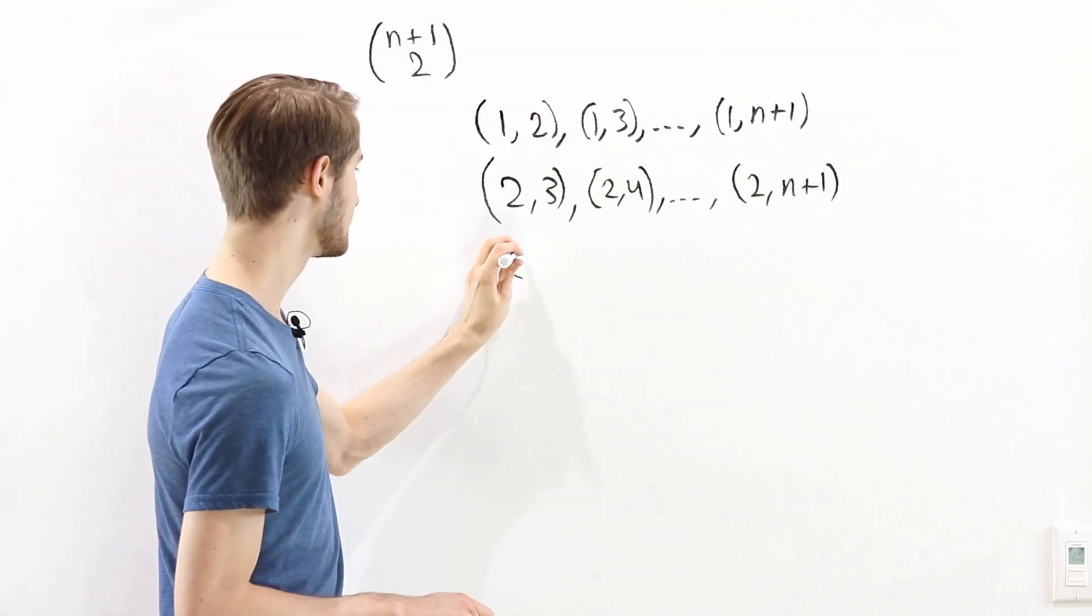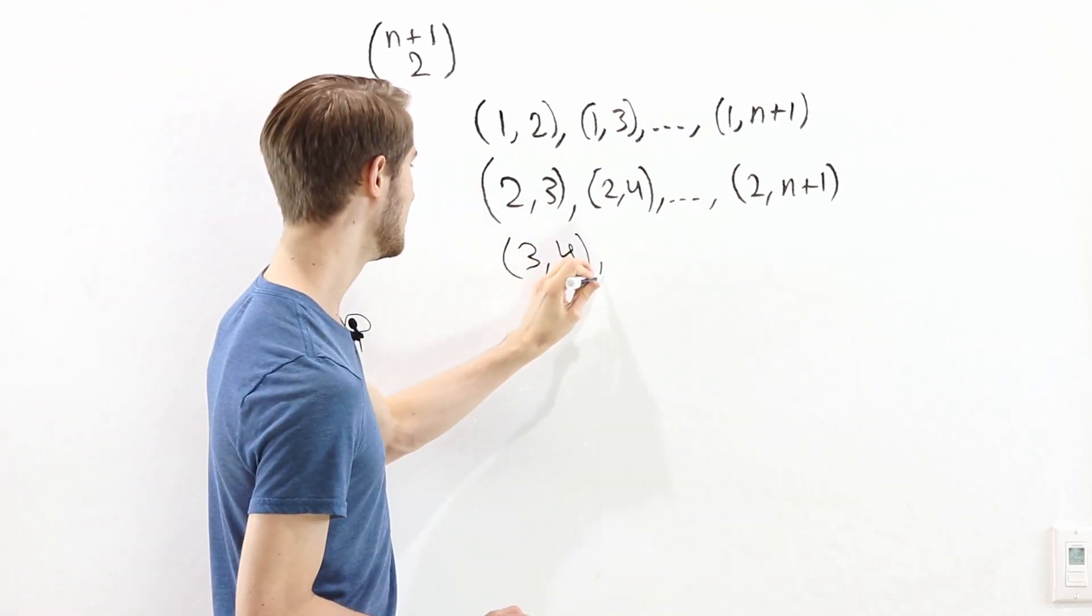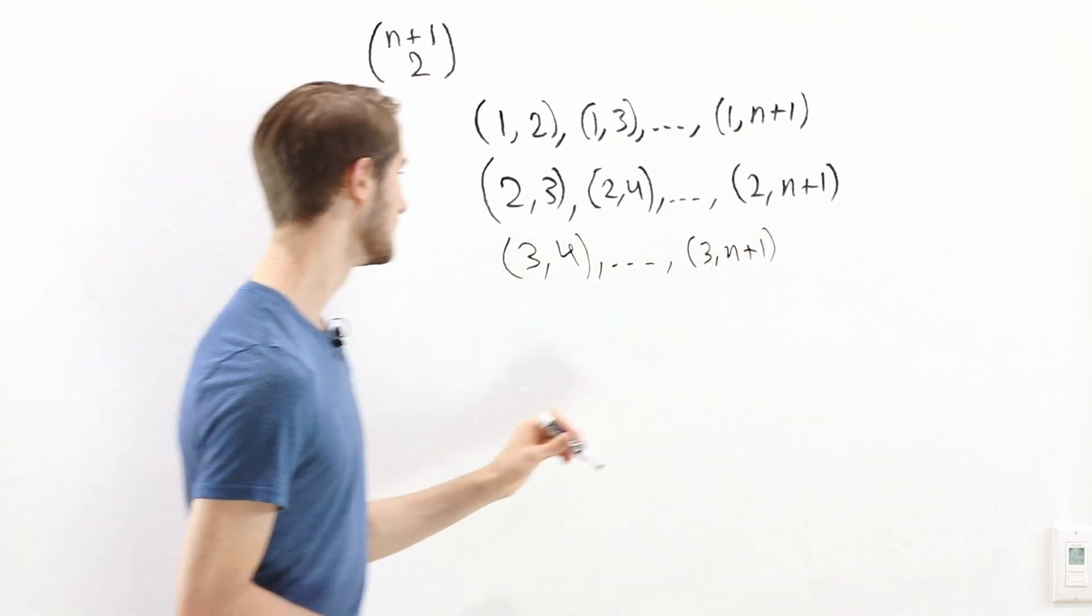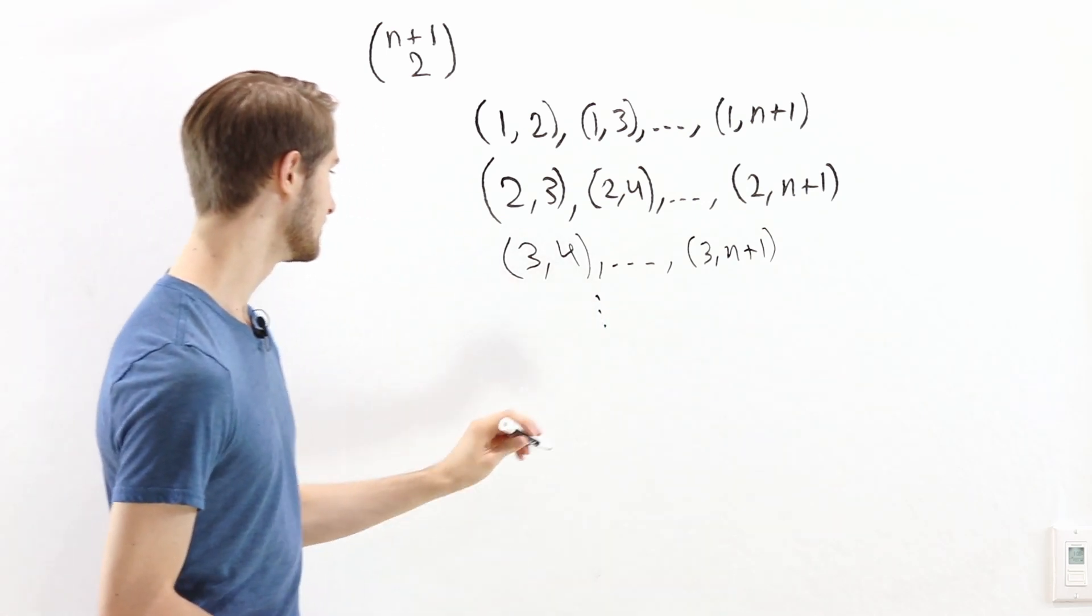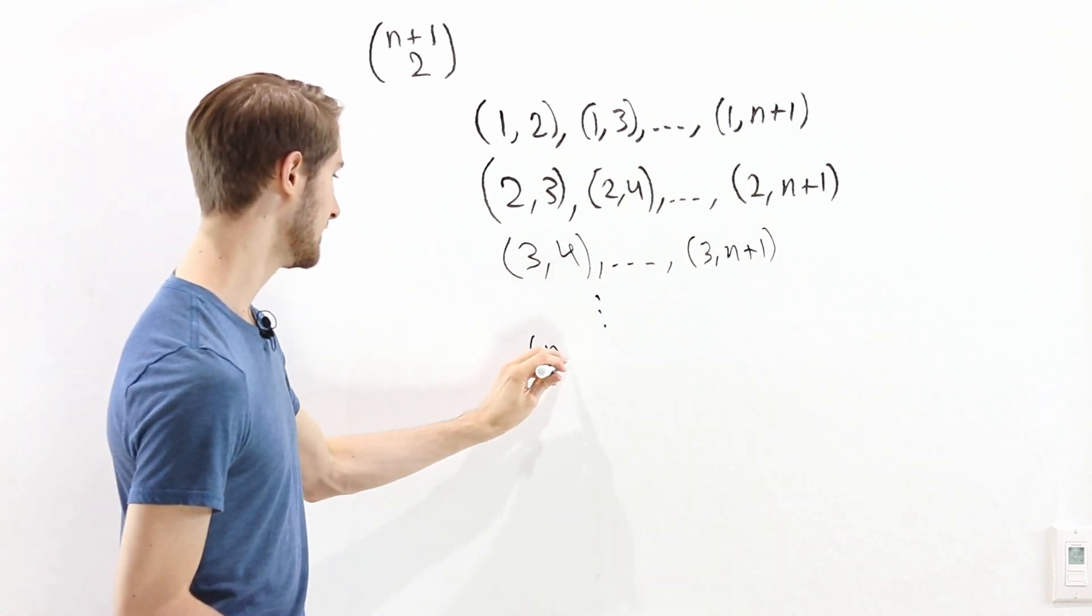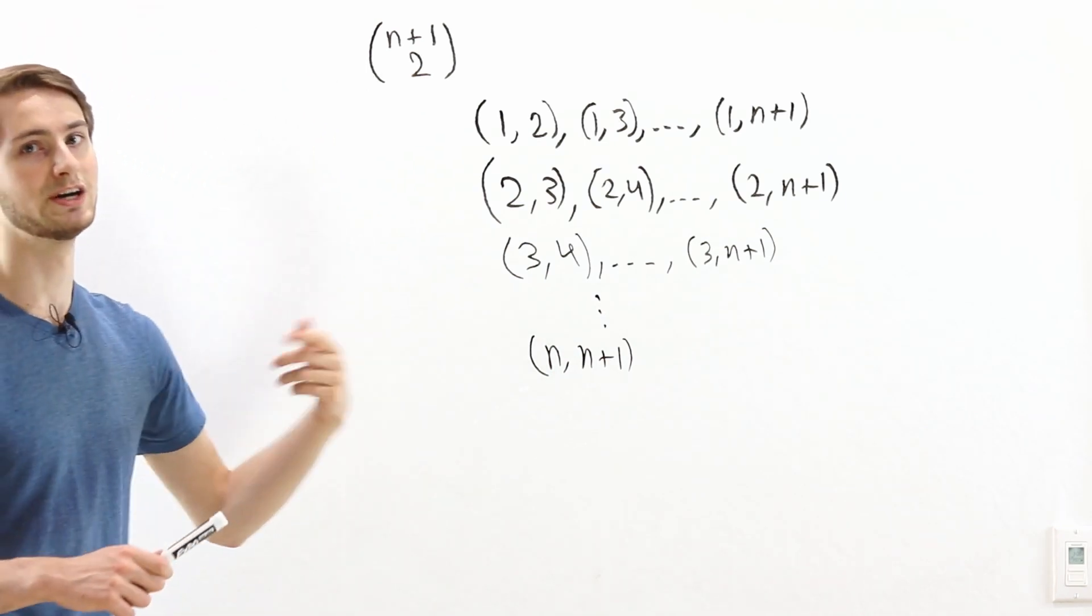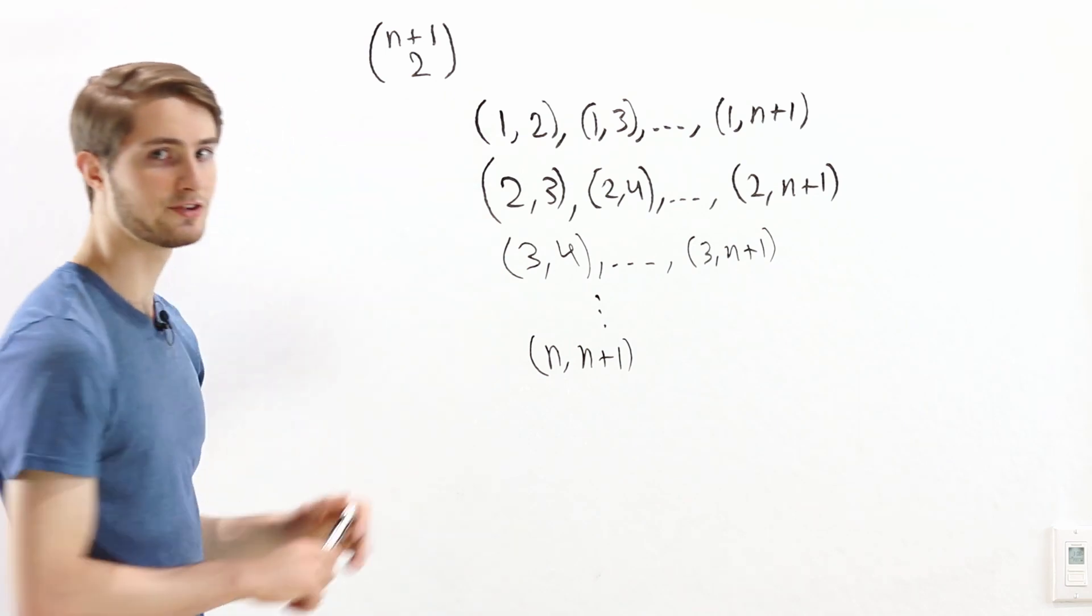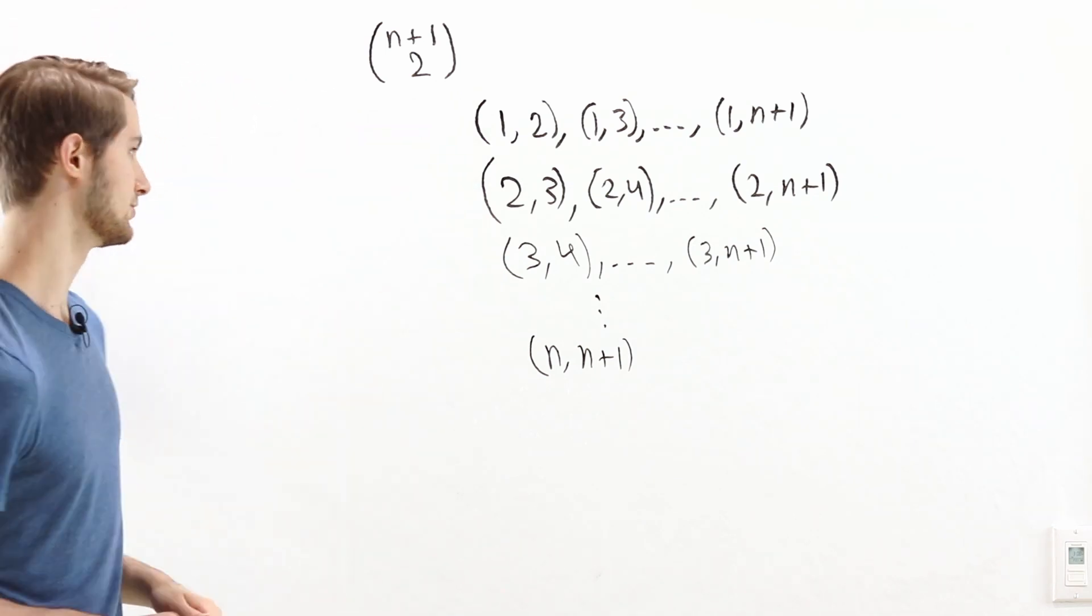After that, we would have all the pairs that have a 3 in them. And we would start with 3,4 and then 3,5 all the way to 3, n plus 1. And then all the pairs with a 4, with a 5, and then we would keep going until the final one, all the pairs that start with n. So these are all of the possible pairs of integers from the range 1 to n plus 1.